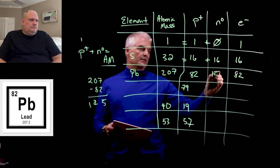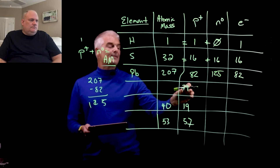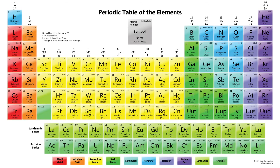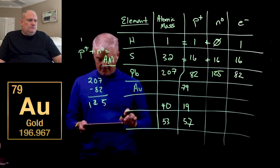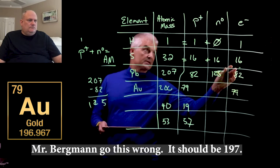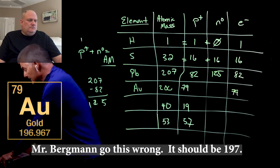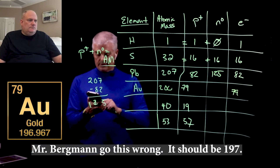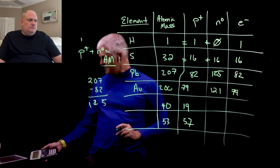If you have 79 protons, that tells you what element it is. Looking on the periodic table for element number 79, you'll find Au — gold. Its atomic mass is 197, rounded to 200. Protons = 79, electrons = 79, and neutrons = 200 minus 79, which gives 121.